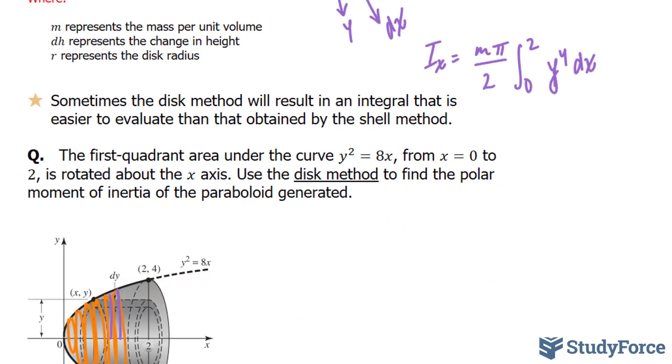I need to somehow manipulate my function so that it becomes y to the power of 4, and that's not hard to do. I can square both of these sides, where I end up with y to the power of 4 is equal to 64x squared. And this is what I'll substitute into here.